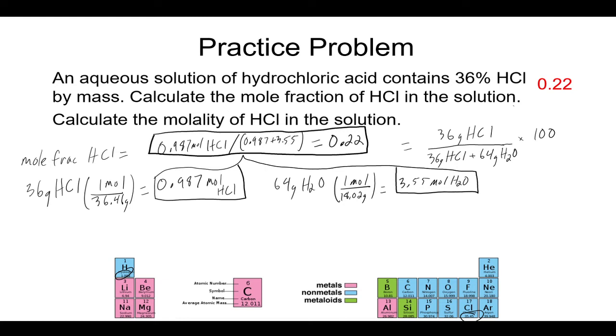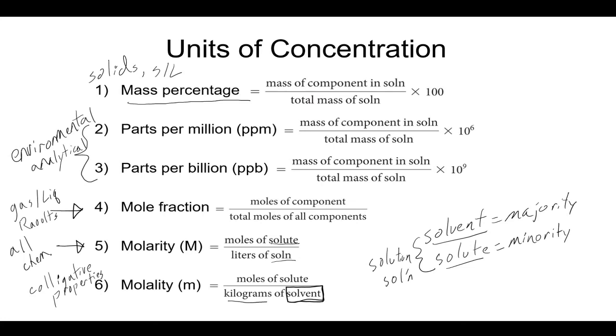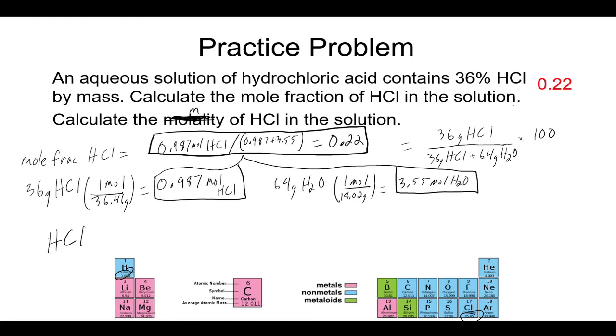Now, we can also calculate the molality of HCl. And the abbreviation here for molality is lowercase m. Molarity is uppercase M. So, be careful because sometimes I wouldn't write molality. I would just write a lowercase m. You need to know that's molality and not molarity. But molality is going to be the moles of solute, which we just obtained in the previous slide, divided by the kilograms of solvent.